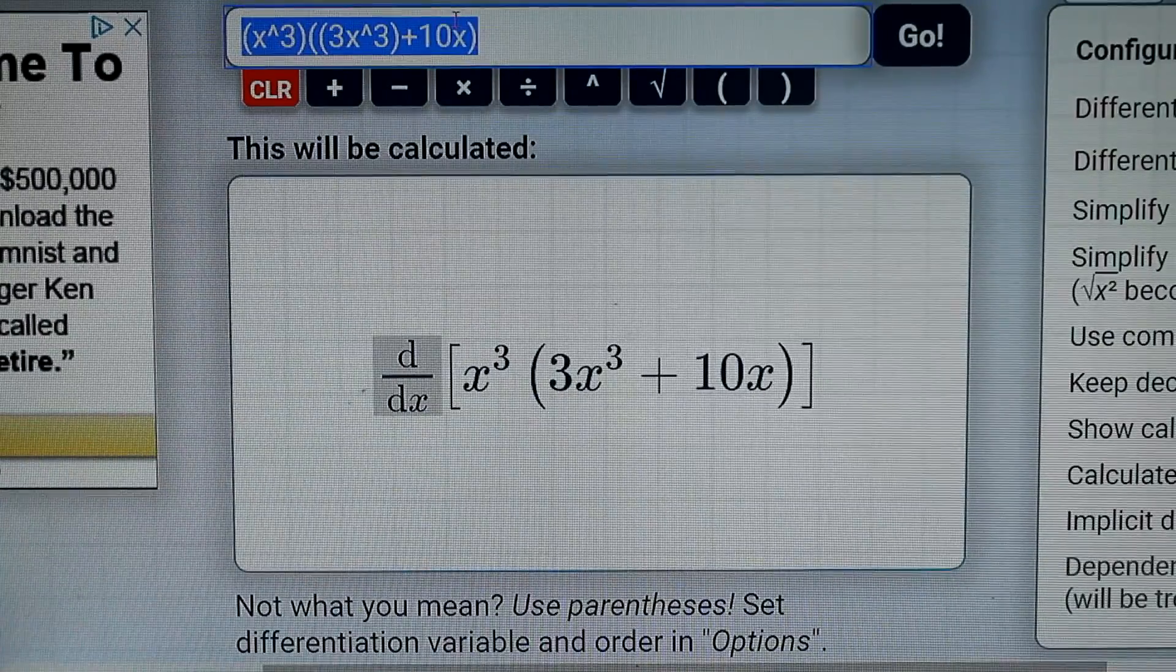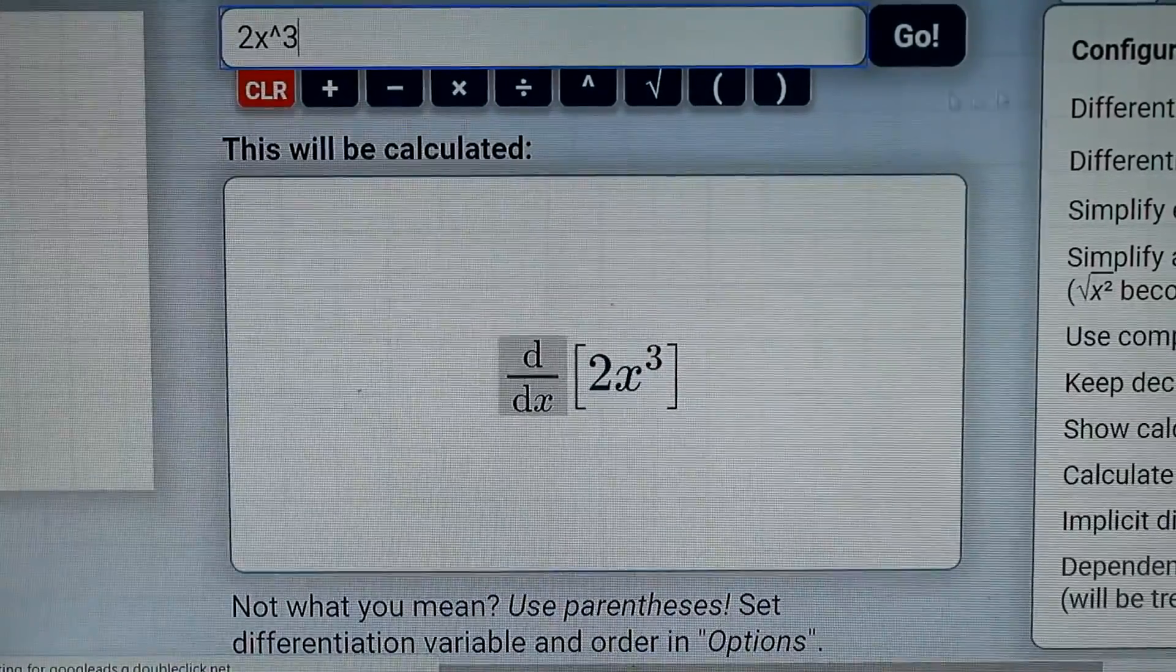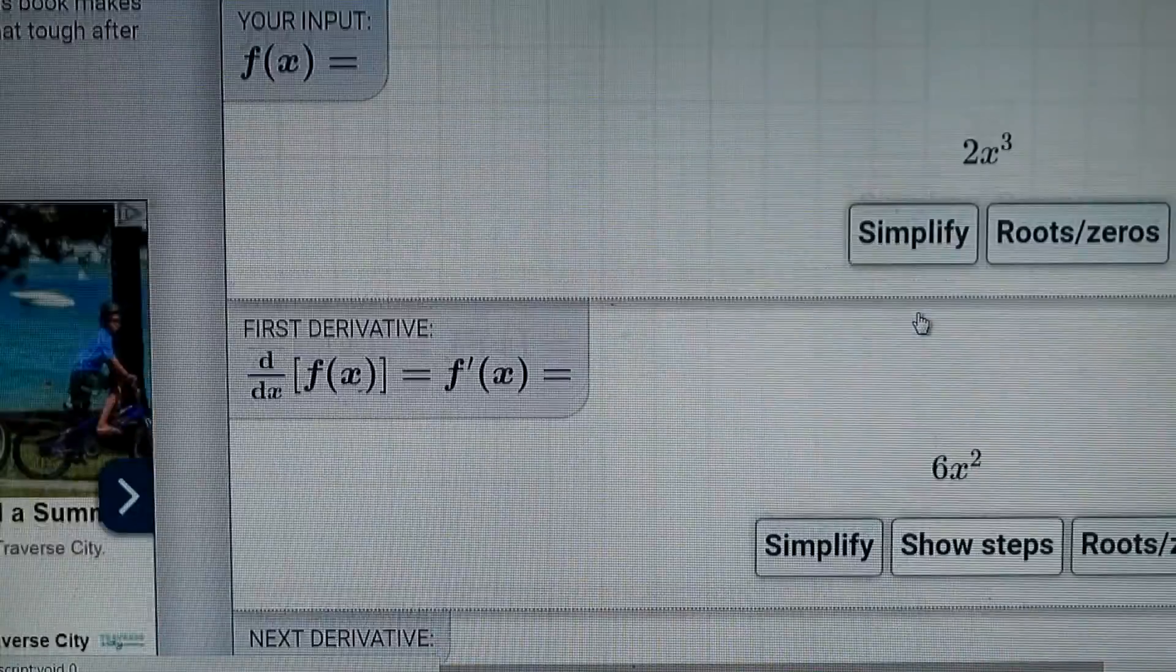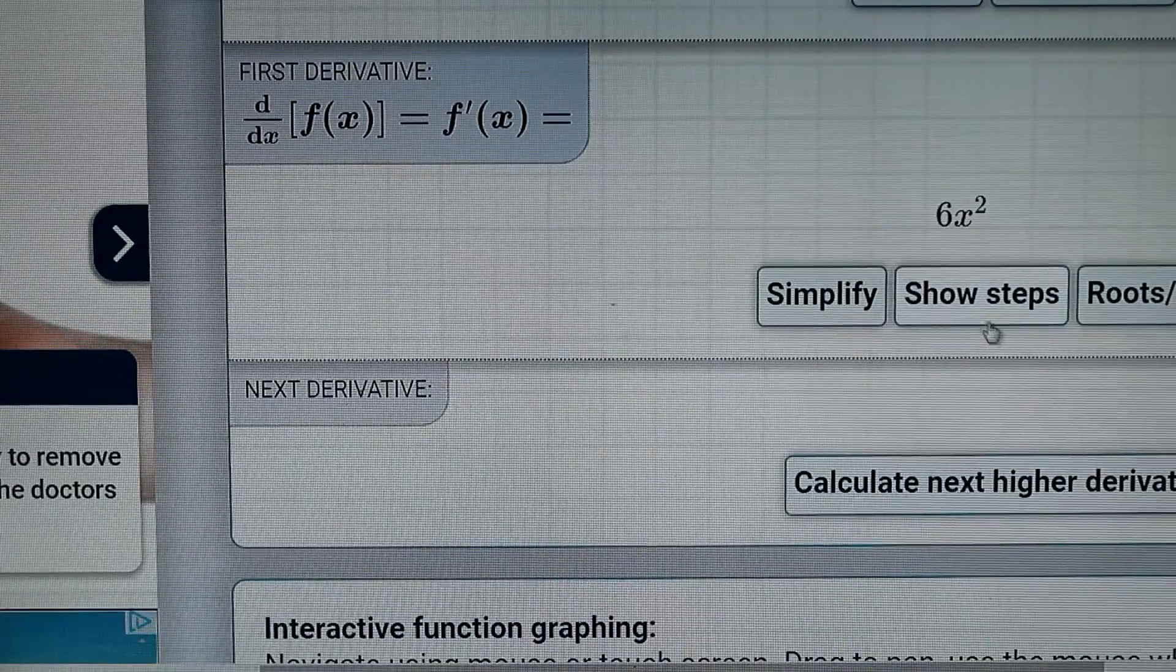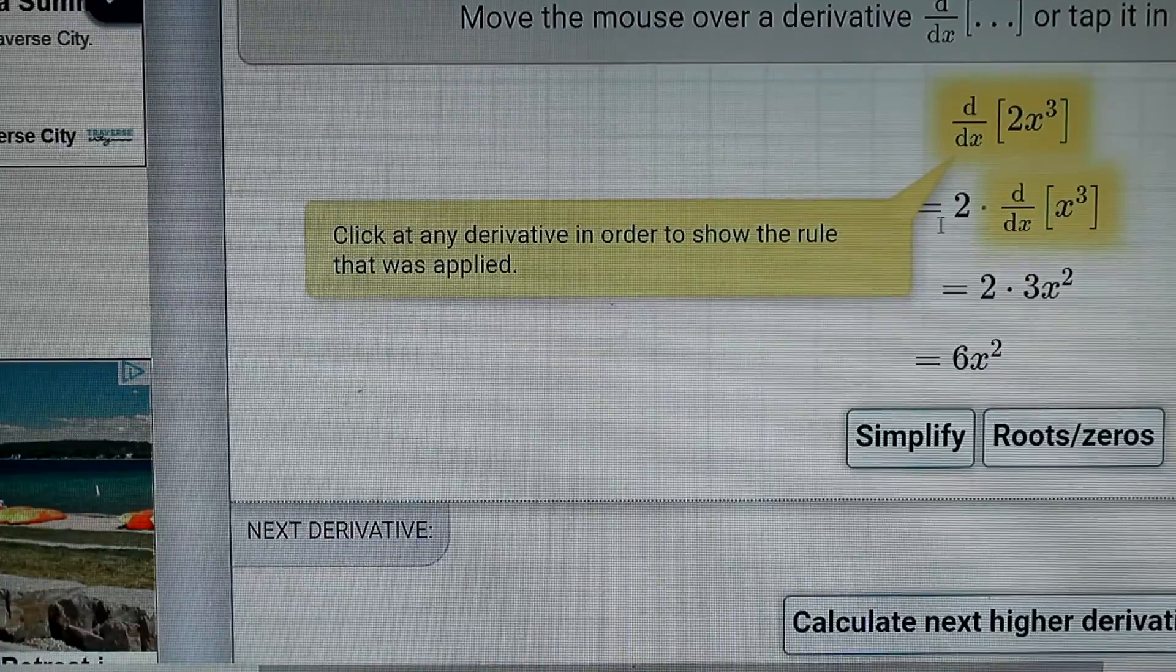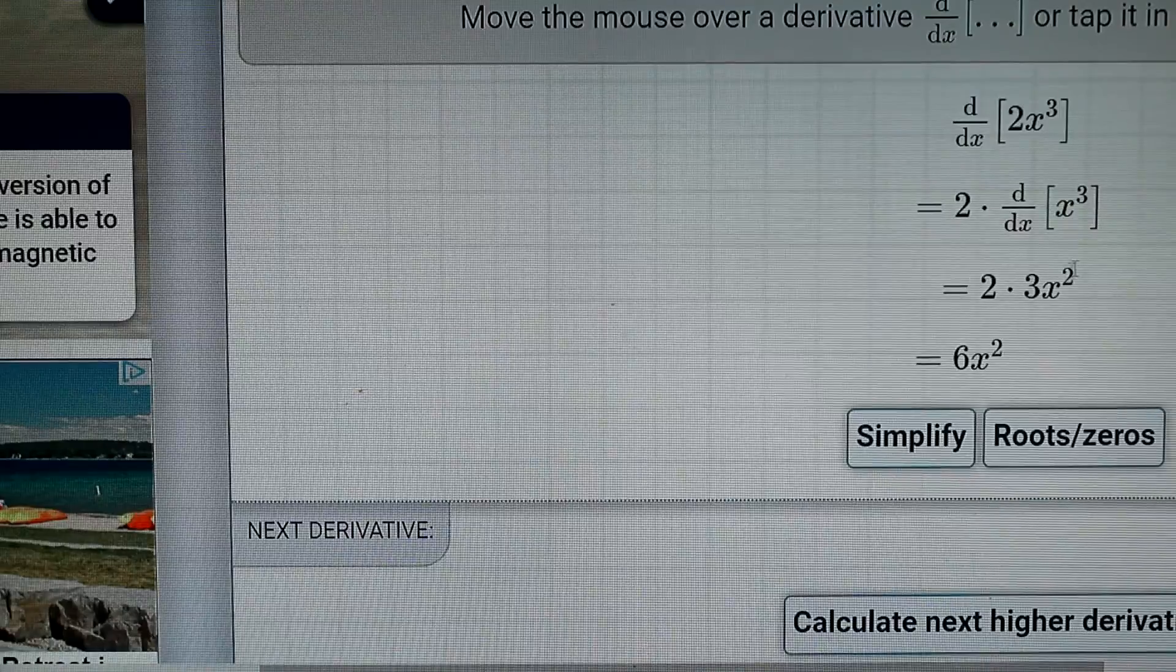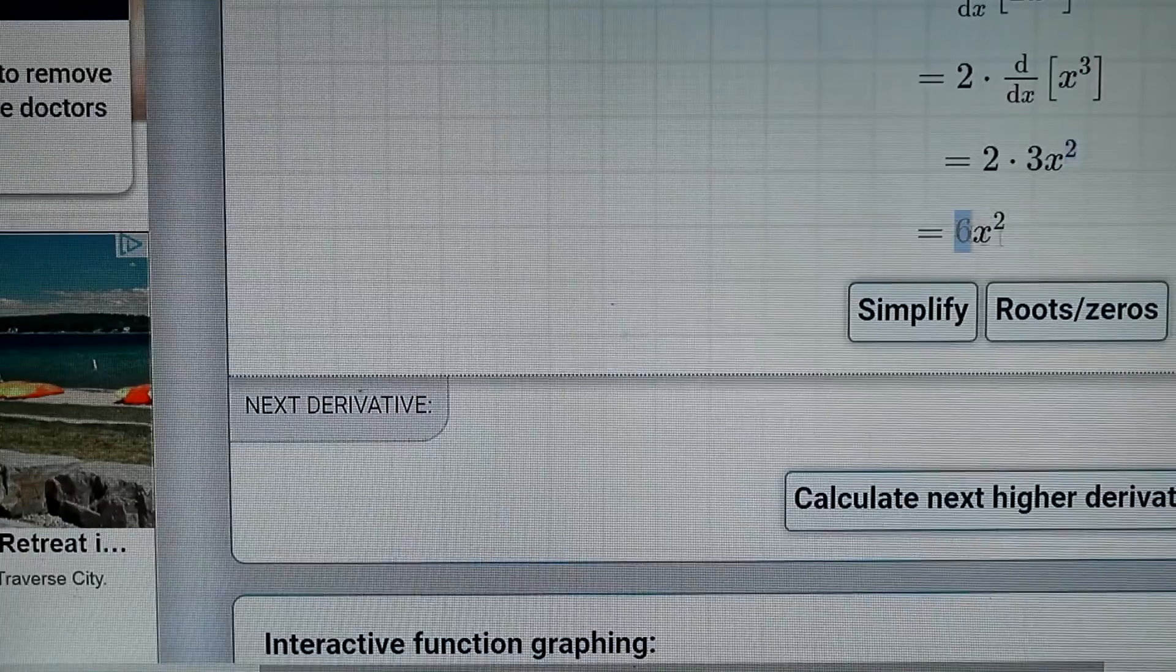So let's do something really simple. Let's do 2x to the third and then go right here. It has what I input and it gives the answers over here. If I want to see the steps, just hit show steps and it shows you the exact steps that followed. So I took the 2 out and then I brought the 3 down and then subtracted 1 from the exponent. And that's all it had to do to come up with the final answer.